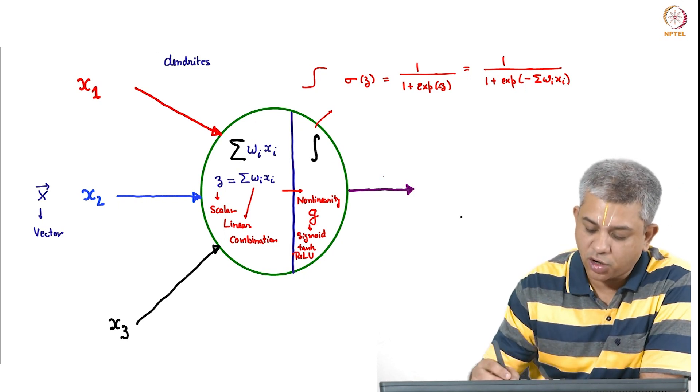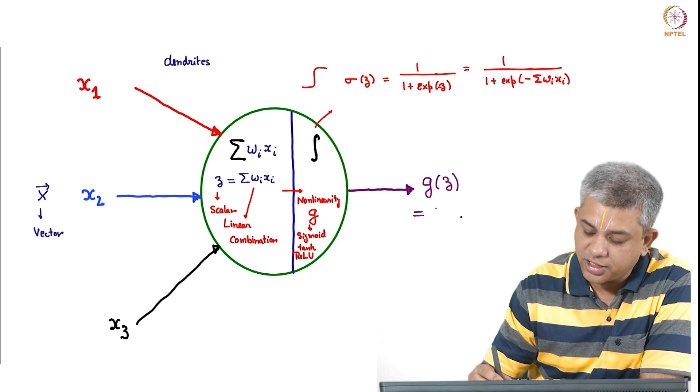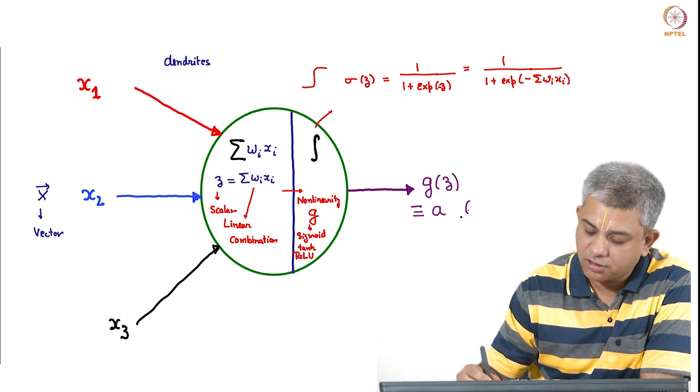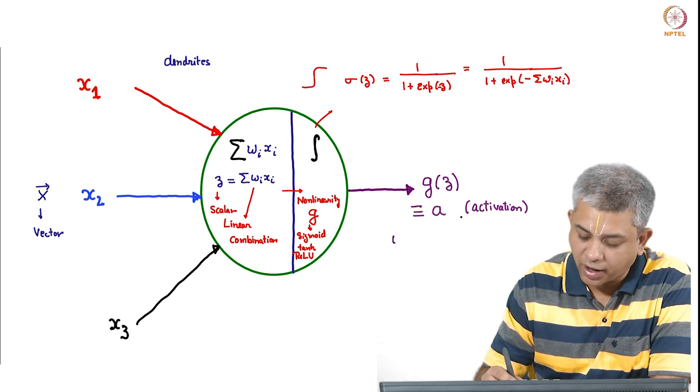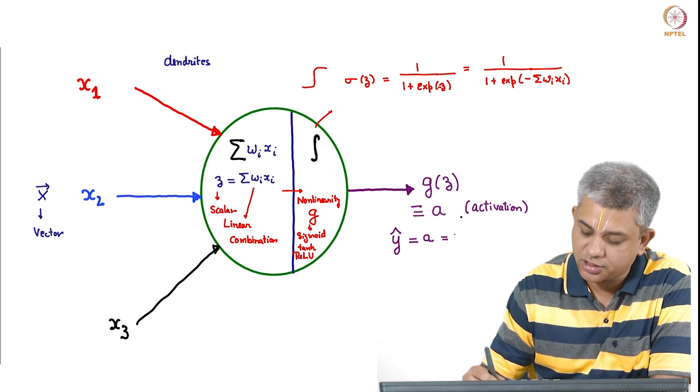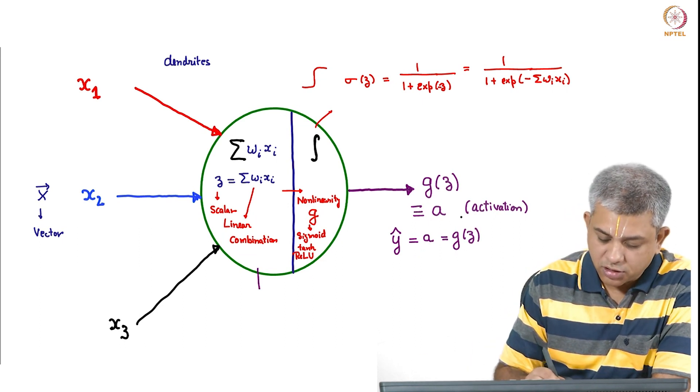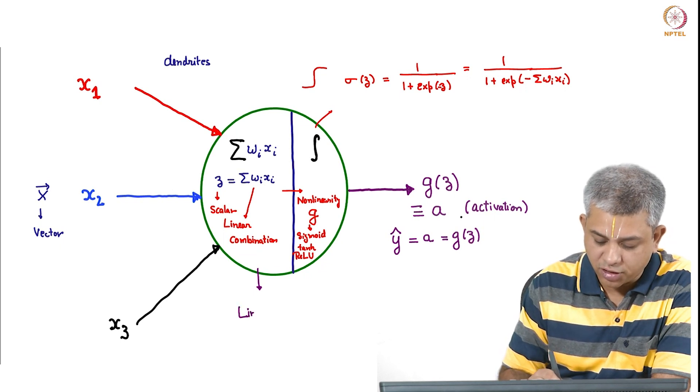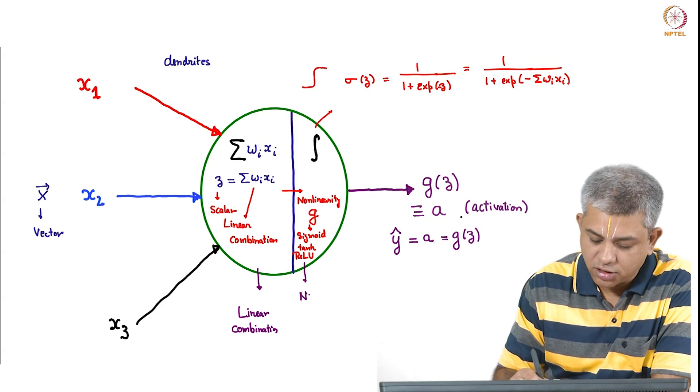Now finally, after all this, what comes out is g of z. This is denoted by A, also labeled the activation. If this is the only thing in your network, then all you have is your prediction is simply the activation of this neuron which is g of z. So remember the two portions of an artificial neuron are linear combination and an additional nonlinearity.